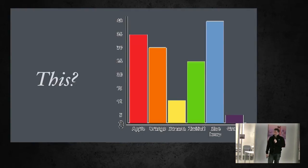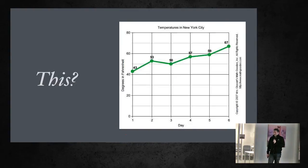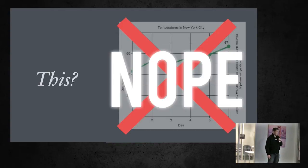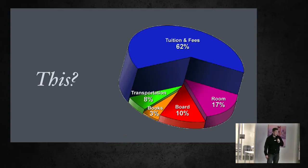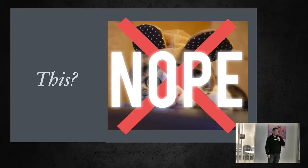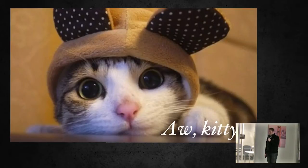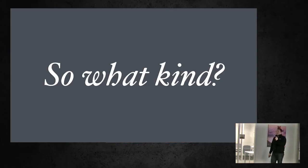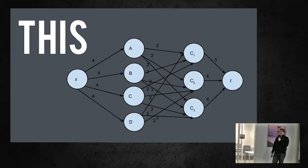What kind of graph do we use to model these relationships? Not a bar graph. Not a pie chart — that's not even a graph. We don't use kitties either, but they are cute. The graphs we talk about in graph theory look like nodes connected by lines — those are the graphs we mean.